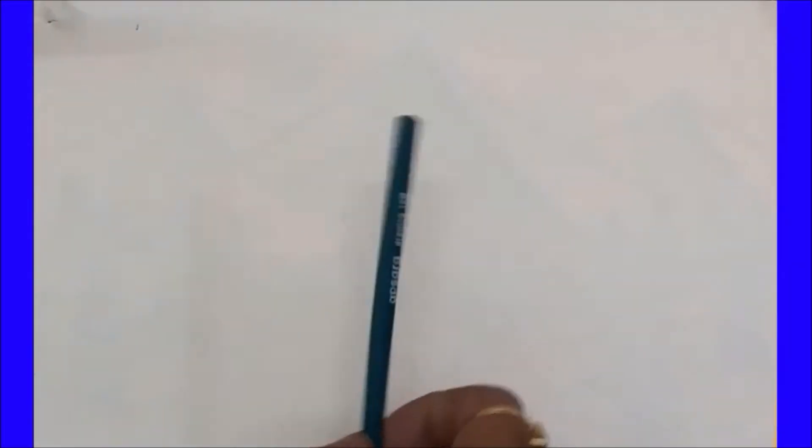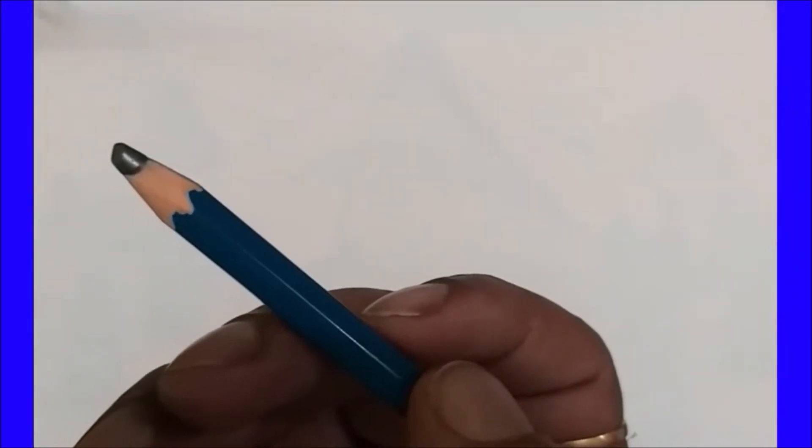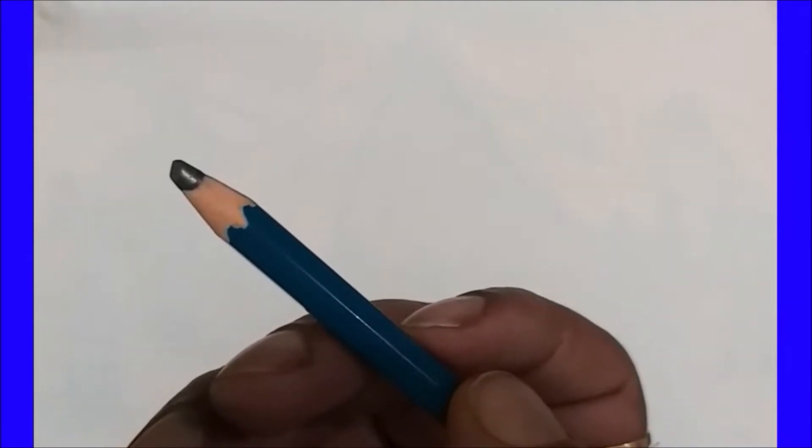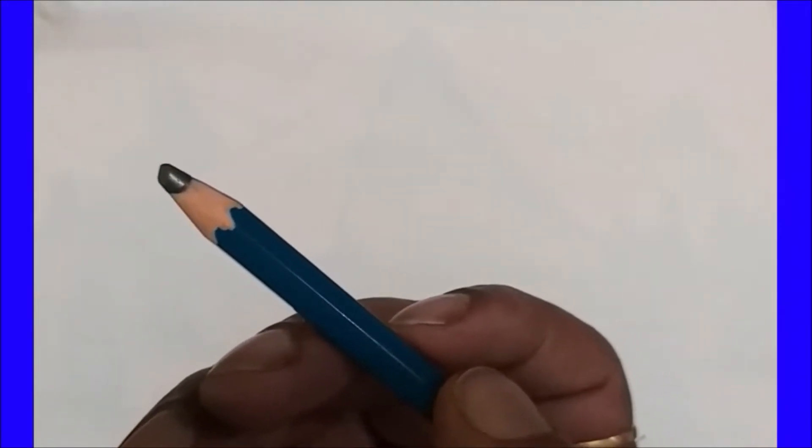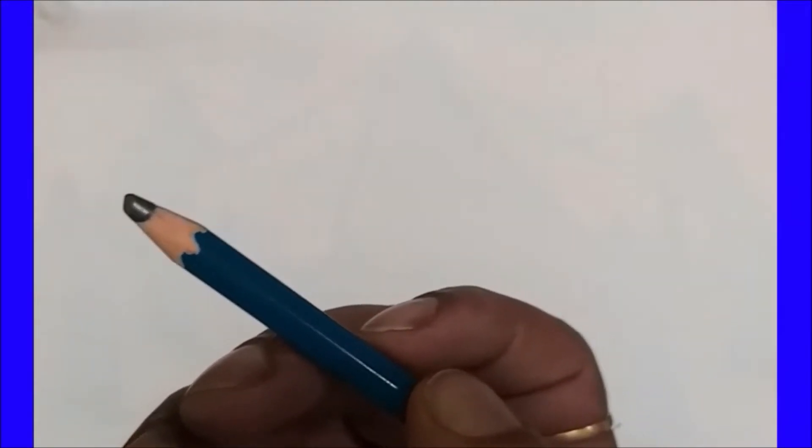Here I am going to use a 10B pencil. First of all, your shading pencil should be a little bit blunt so it will give a nice texture to your drawing. Now we are going to start.